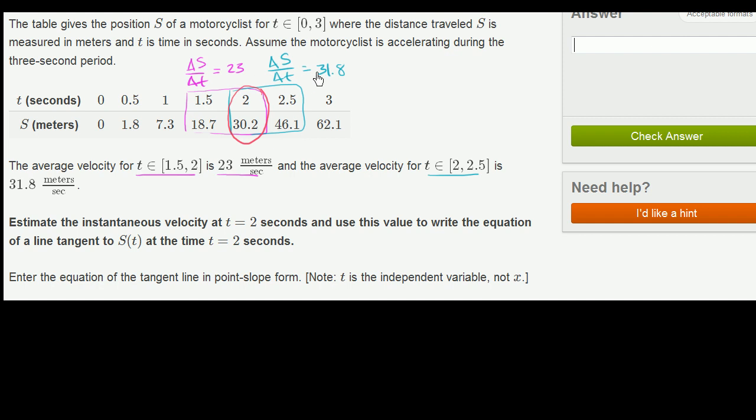So let's do that. The average is going to be 23 plus 31.8 over 2. That equals 54.8 over 2. And 54 divided by 2 is 27, so it's 27.4.